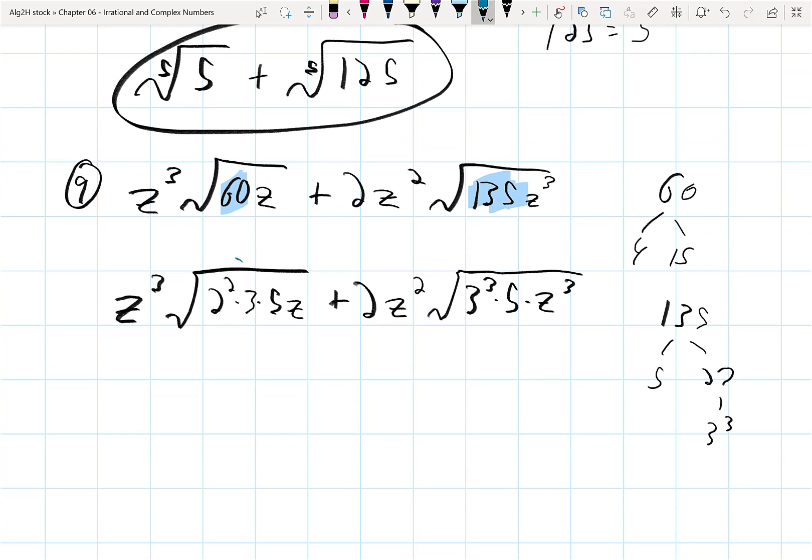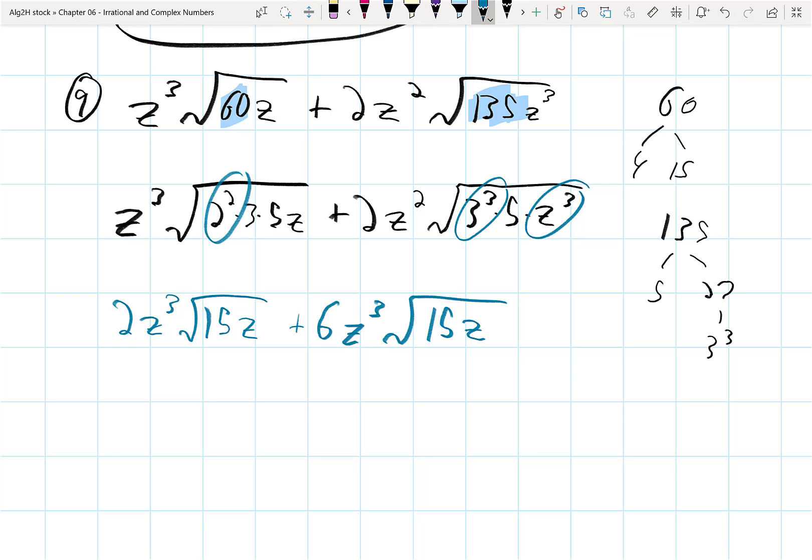Now let's look at what kind of radical it is. I can take the 2 squared out as a 2z cubed roots. Let's bring that together as 15z plus, I can take the 3 cubed out and the z cubed out. 3 cubed comes out as a 3, which multiplies by the 2 to give me a 6. z cubed comes out as a z, which multiplies that to give me a z cubed. Then I still have a 3 and a z left in, and a 5, this gives me 15z. And now these are like terms, truly. They match in everything. 2z cubed root 15z plus 6z cubed root 15z is equal to 8z cubed root 15z. And that's done.